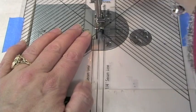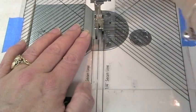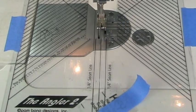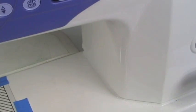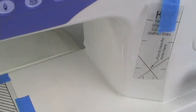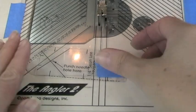So once it's in place, you lift the foot, lift the needle, and remove the key. Whenever I'm using my Angler, I always make sure that I tape my key right to my machine. Because when I'm done, I can tape it right back to my Angler.